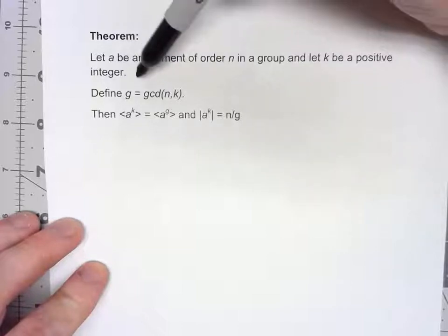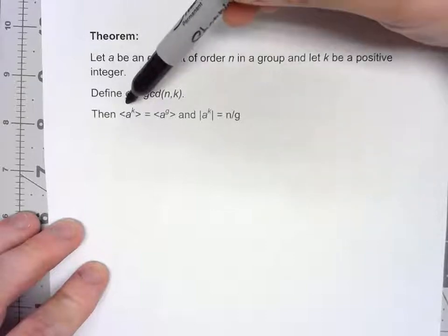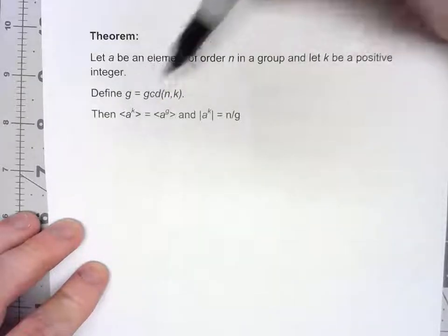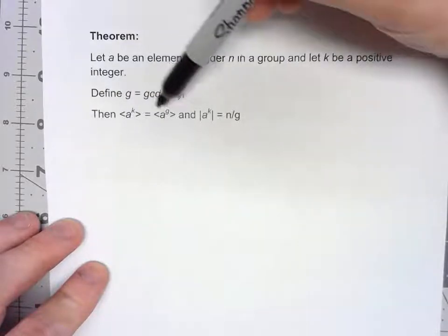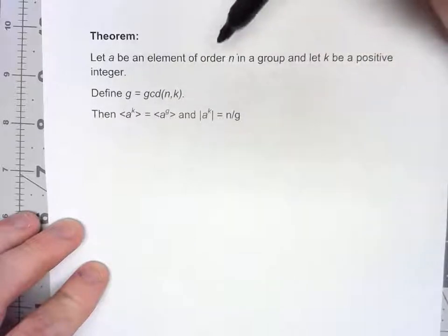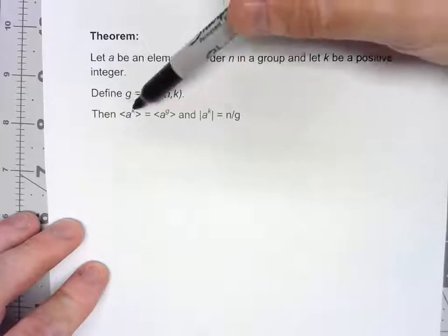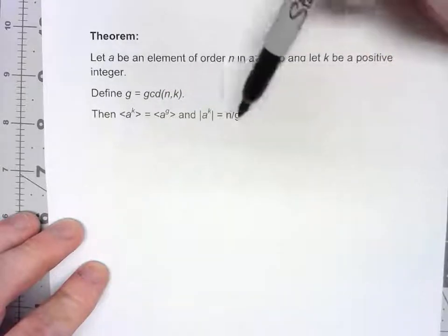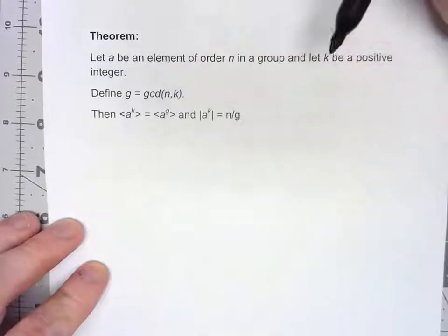What I can do is calculate the GCD of the order of that element and the integer. Then the subgroup generated by a to the power k is the same as the subgroup generated by a to that GCD, and further, the order of that a^k is the order of a divided by that GCD.